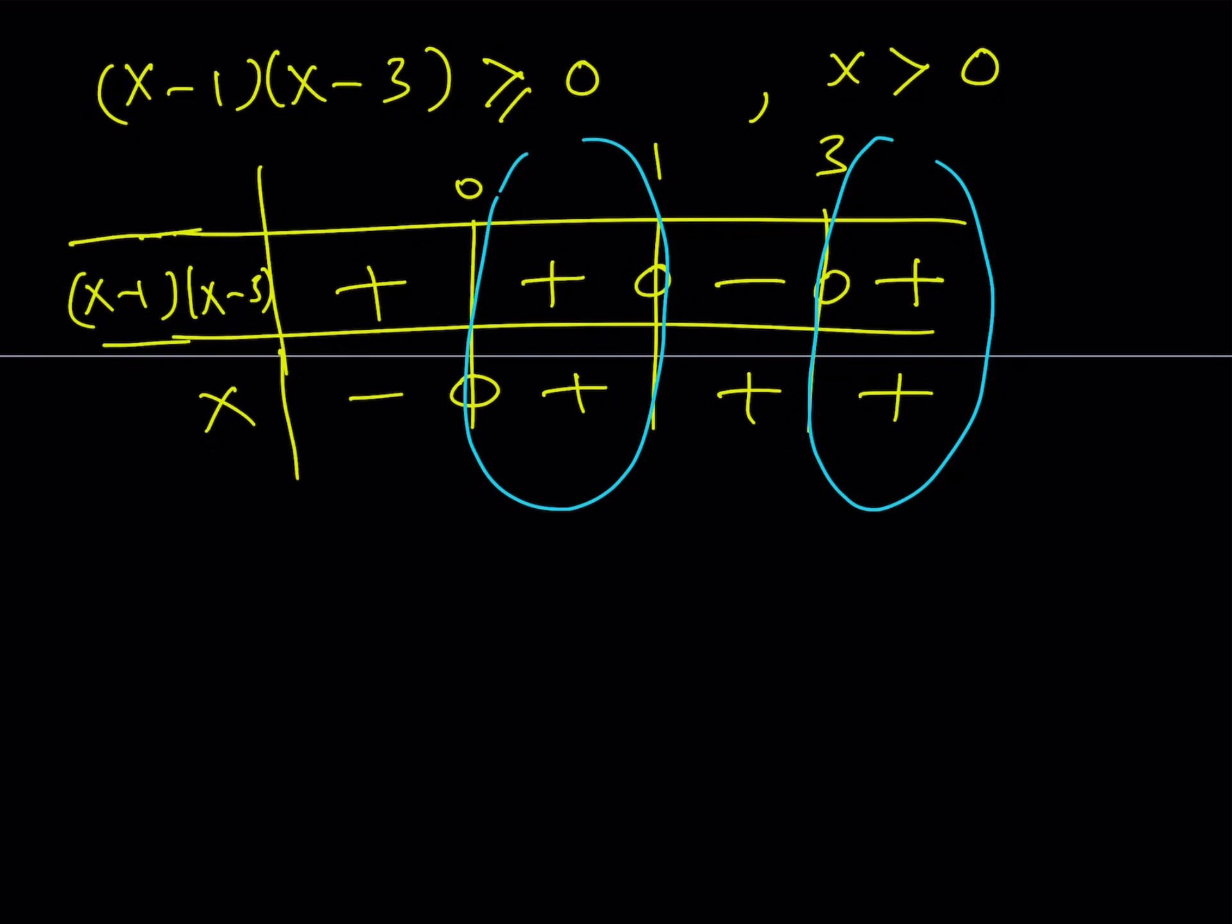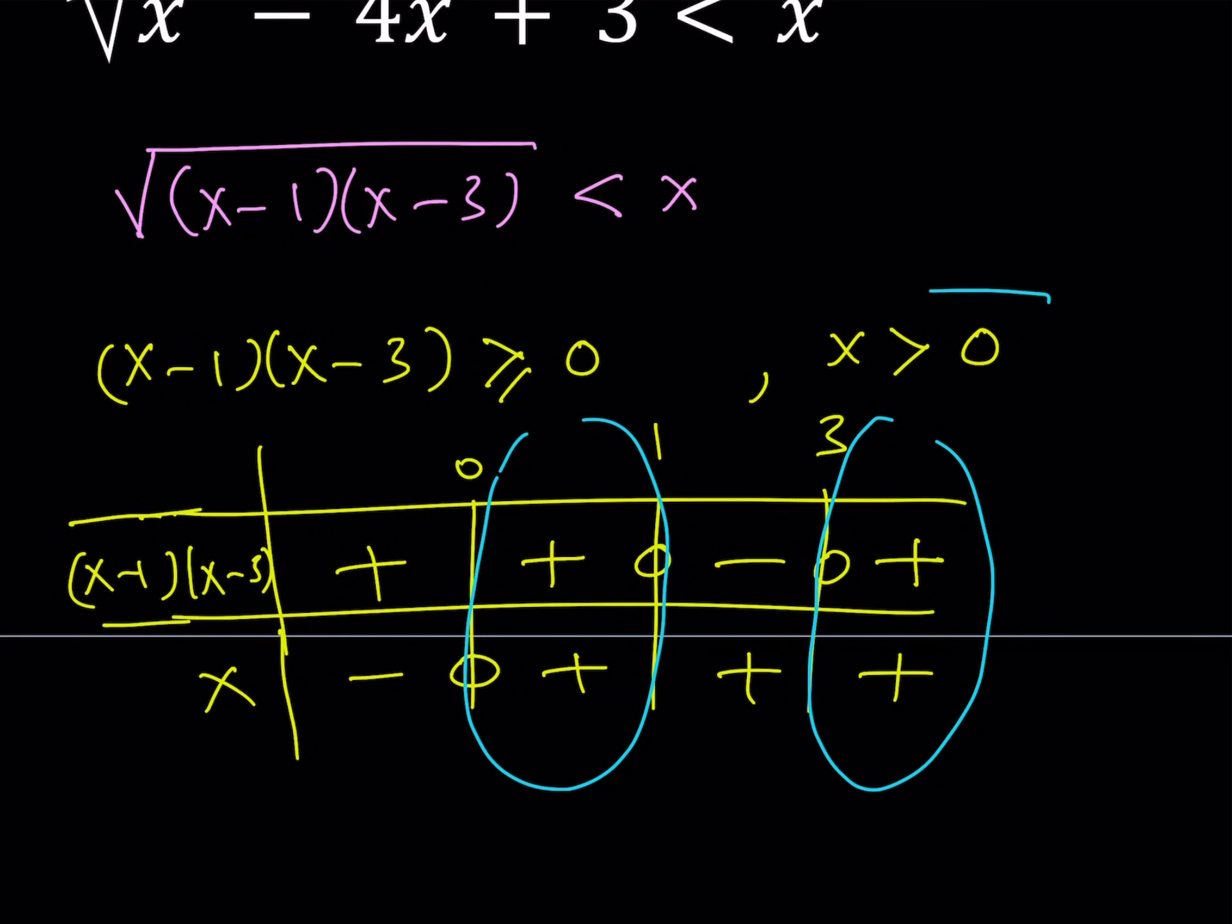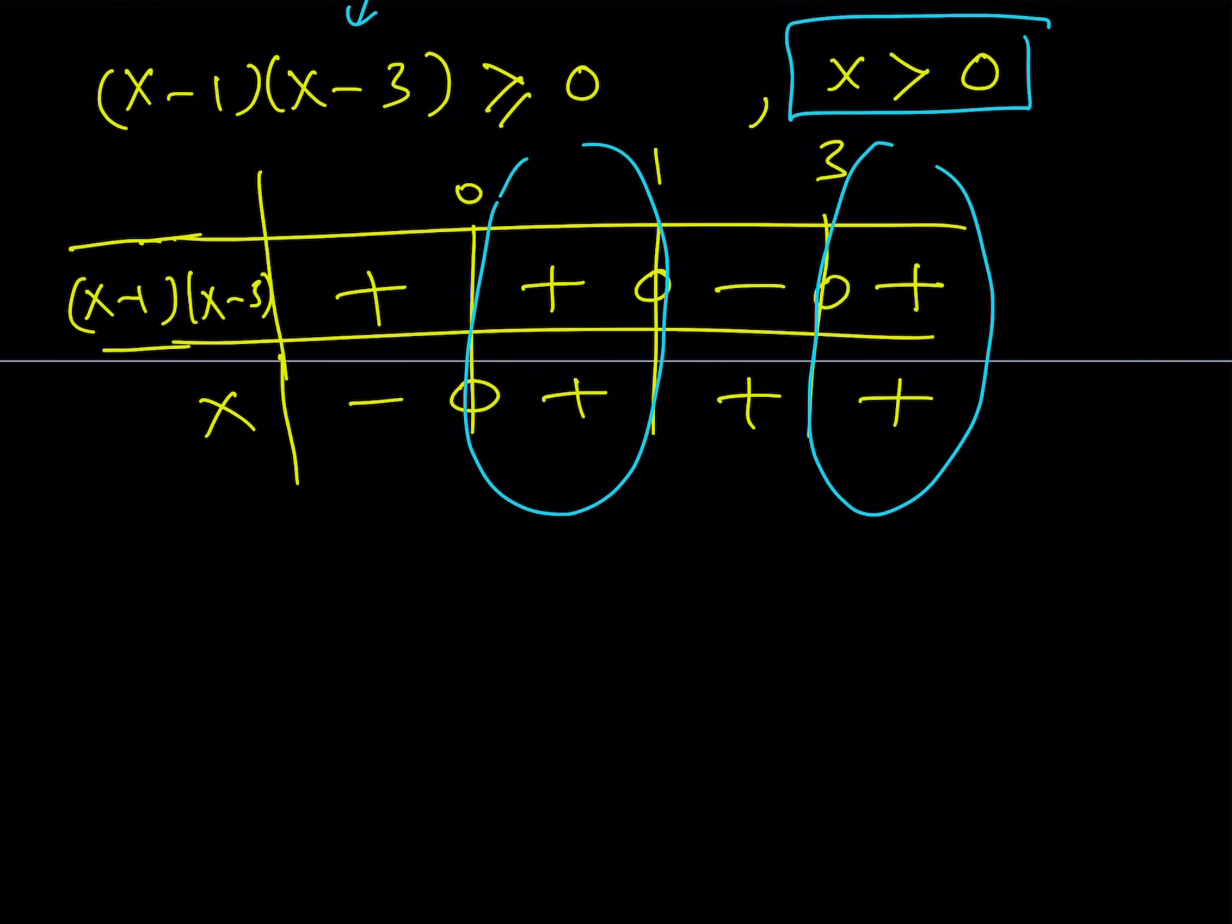So this gives me the interval 0 to 1. So is 0 included? Let's take a look at it. X cannot equal 0. X needs to be greater than 0. So 0 is not included, but 1 is included because of this. So I'm going to write it like this: 0 to 1, half closed interval.